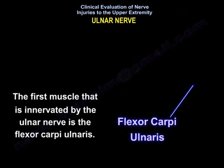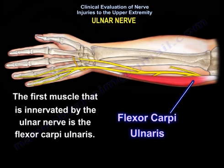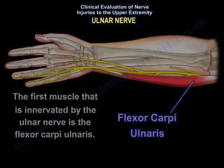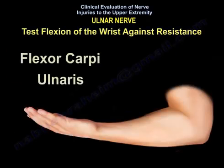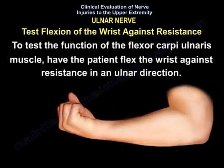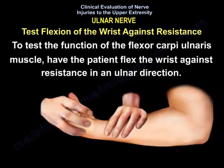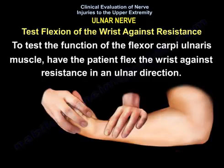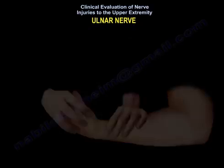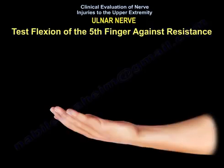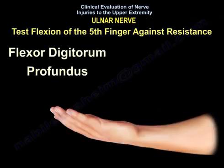As you can see in this diagram, to test the flexor carpi ulnaris, have the patient flex the wrist against resistance in an ulnar direction. This will test the function of the flexor carpi ulnaris muscle, along with flexion of the fifth finger against resistance.